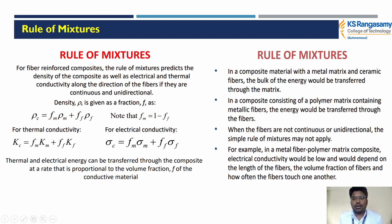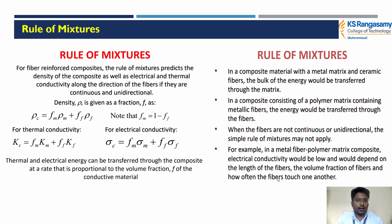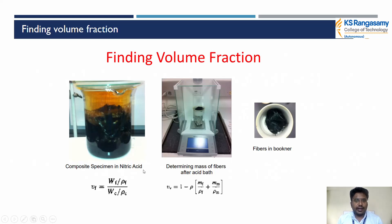Why do we use the rule of mixture in composite material? For a composite material with a metal matrix and ceramic fiber, the bulk of the energy is transferred through the matrix. For composites with a polymer matrix containing metallic fiber, the energy is transferred through the fiber. For a metal fiber polymer matrix composite, the electrical conductivity is low and depends on the length of the fibers, the volume fraction of the fiber, and how often the fibers touch one another. The volume fraction from the nitric assay uses: Vf = (Wf / ρf) / (Wc / ρc).